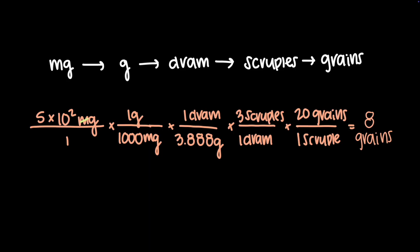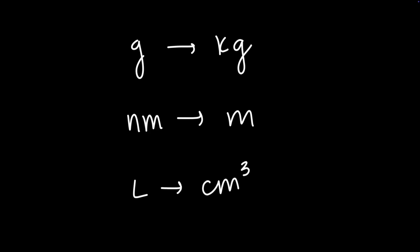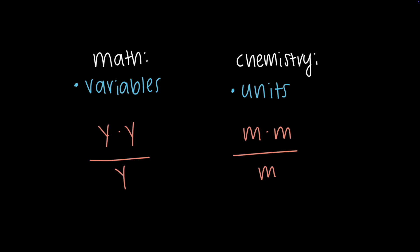Dimensional analysis ensures your answers make sense with the correct units and that your calculations are correct through your conversions. Whether you're converting grams to kilograms, nanometers to meters, or liters to cubic centimeters, the principles are the same. Just like in math when we cancel out the same variable on top and on bottom, we can cancel out units that are the same on top and on bottom.